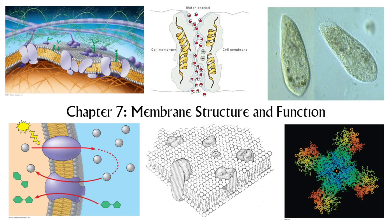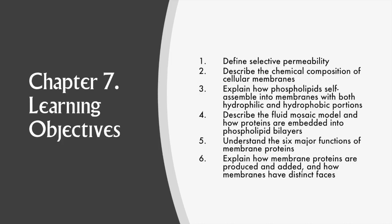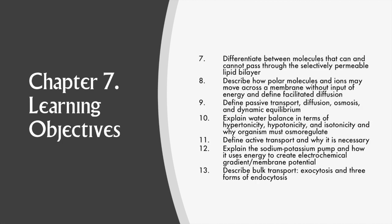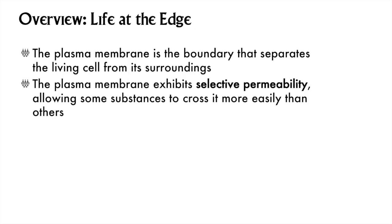As promised in chapter 6, chapter 7 is dedicated exclusively to membrane structure and function. You may want to look back at chapter 6 and even bits of chapter 5 for a richer understanding of this chapter. Here are our objectives 1 through 6 and 7 through 13. This chapter is all about membrane structure and function.